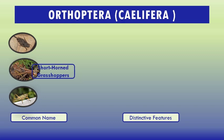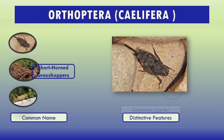The antennae are normally thread-like, sometimes flattened, and occasionally enlarged at the tip. Tympana are often present, located on the sides of the first abdominal segment, but the cerci and ovipositor are always short. Some Caelifera species inhabit areas of bare soil; many are associated with grasses or broadleaf plants while others dwell in trees. Eggs are normally deposited in soil in clusters within protective structures called egg pods.